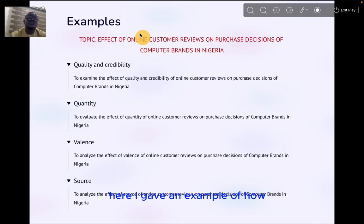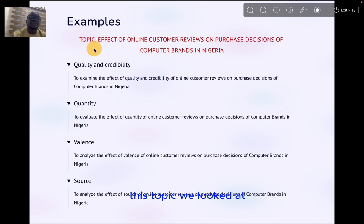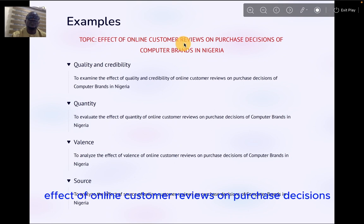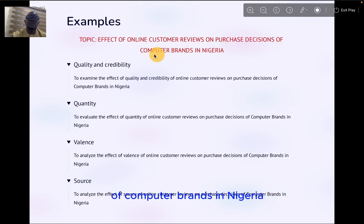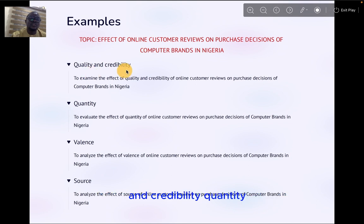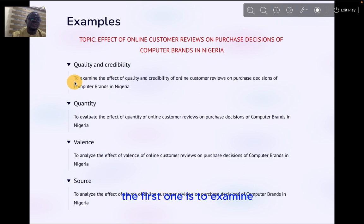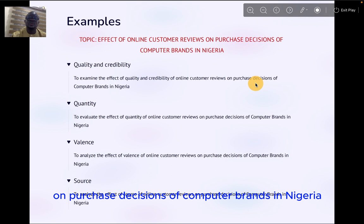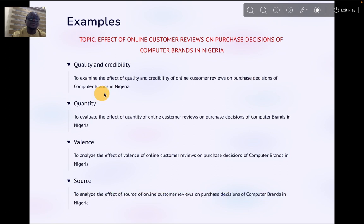Here is an example of how to formulate research objectives using a practical topic — the same topic we looked at in our last video on research questions. The topic is: Effect of online customer reviews on purchase decisions of computer brands in Nigeria. The proxies for online customer reviews are quality and credibility, quantity, balance, and source. Using action words, the first objective is: to examine the effect of quality and credibility of online customer reviews on purchase decisions of computer brands in Nigeria. This objective relates to the first research question from our last video.